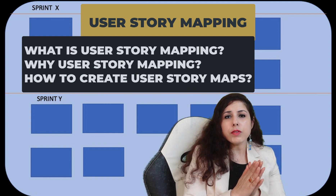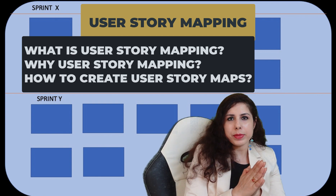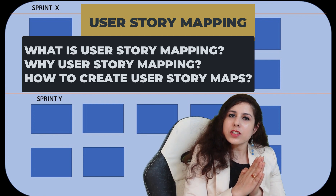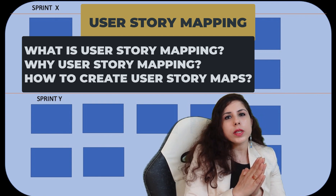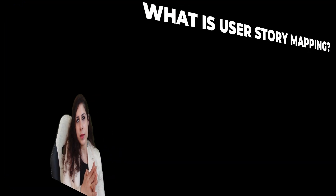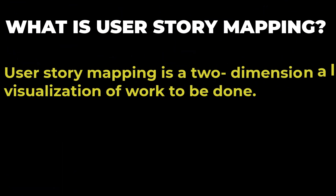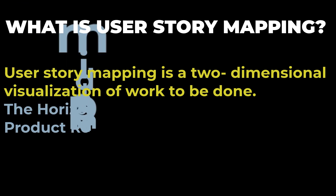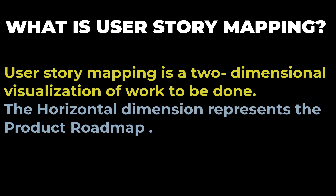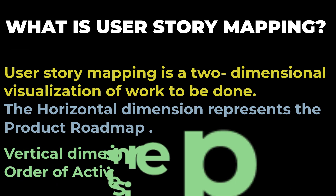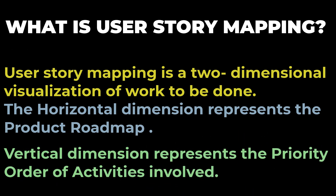For better understanding, we will also look into an example. So let's get started with: what is user story mapping? User story mapping is a two-dimensional visualization of a work to be done in a project. The horizontal dimension represents the product roadmap and the vertical dimension represents the priority order of all this work.